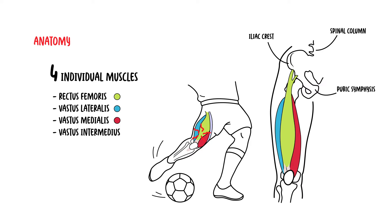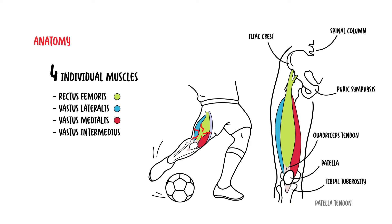The quadriceps muscles have different origins, but converge and insert onto the patella as the common quadriceps tendon. This tendon then envelopes the patella and inserts onto the tibial tuberosity. The portion of the tendon that extends inferior to the patella is generally referred to as the patella tendon.